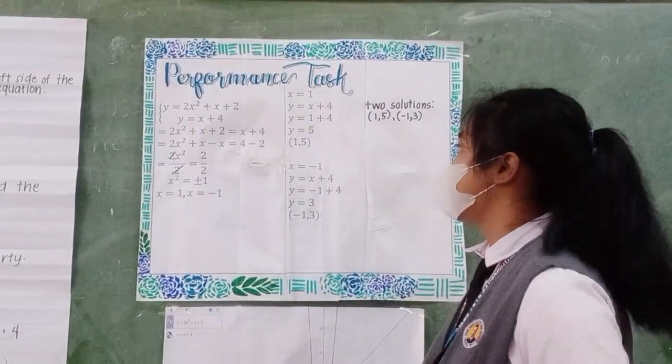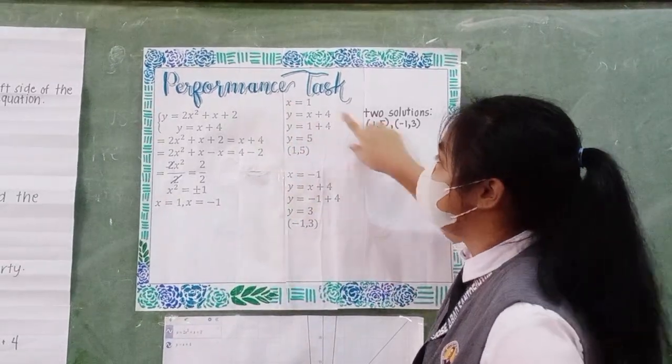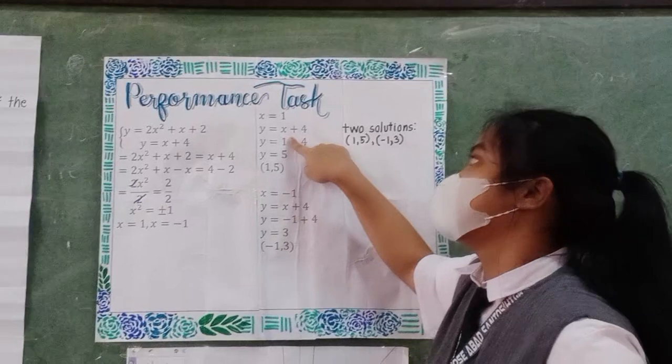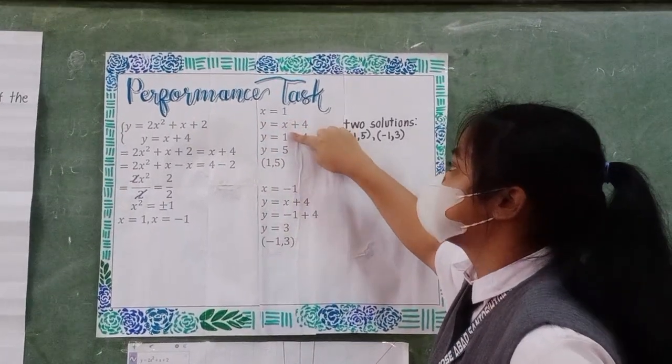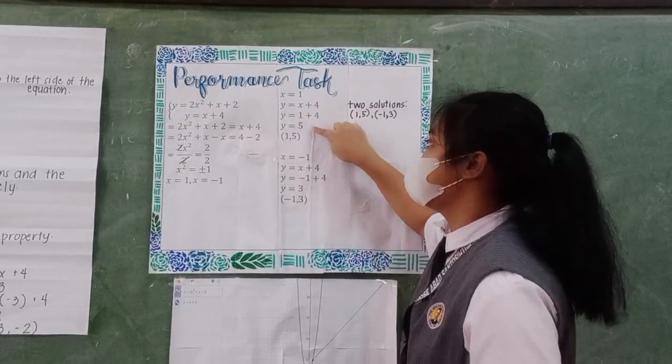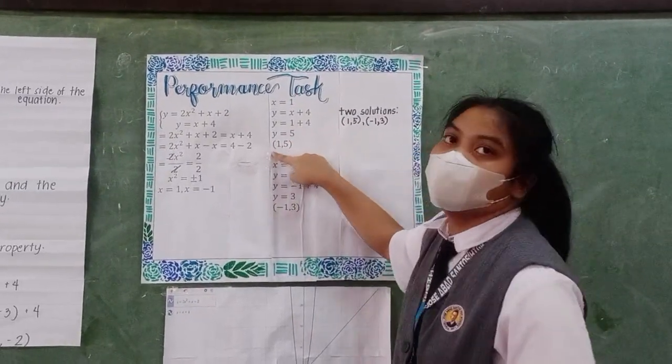Moving on to find the value of y, we have to substitute the value of x to the equation y equals 2x + 4. So x equals 1 plus 4, y equals 5. The coordinate will be (1, 5).